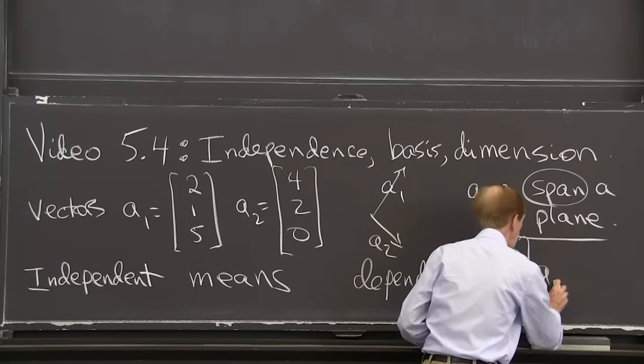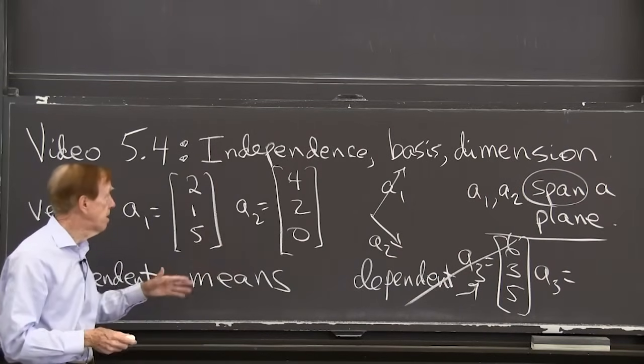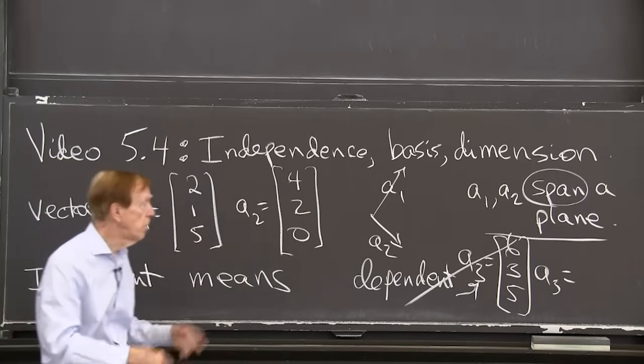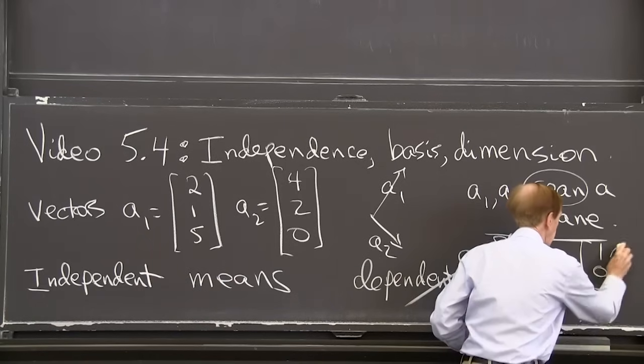All right. Let me take a3 equal some other, not a combination of these, but headed off in some new direction. Well, I don't know what that new direction is. Maybe 1,0,0. What the heck?